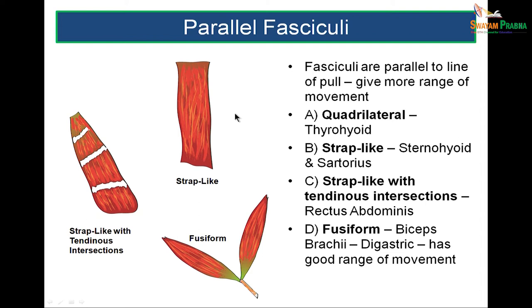Parallel fasciculi are further divided by shape into quadrilateral like thyrohyoid; strap-like like sternohyoid and sartorius; strap-like with intersections like the rectus abdominis of the anterior abdominal wall; or fusiform like the heads of biceps or the digastric muscle.